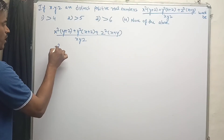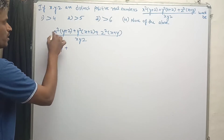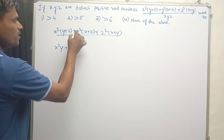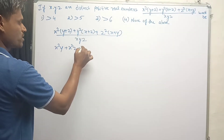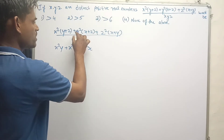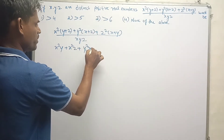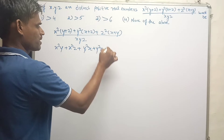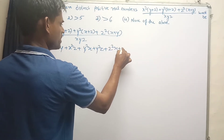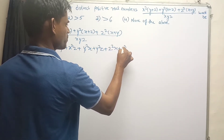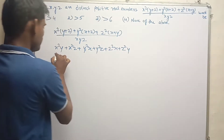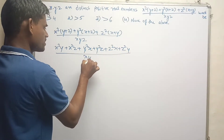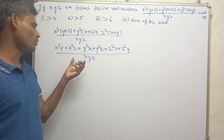So, x squared into y gives us x²y, plus x²z, plus y squared into x gives y²x, then y squared into z gives y²z, plus z²x, and z²y, all divided by xyz.